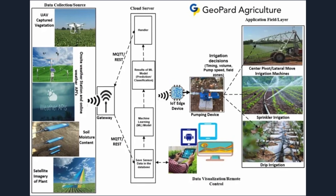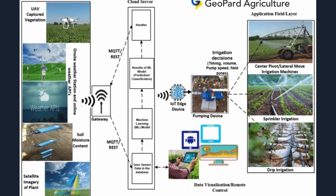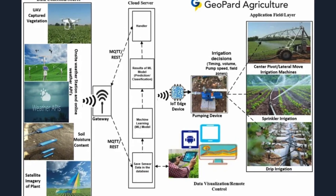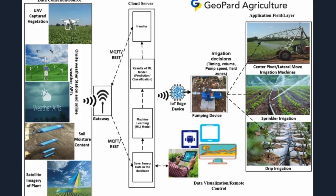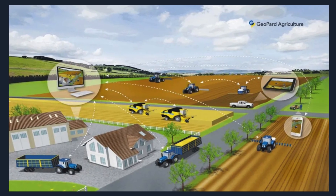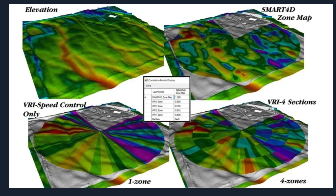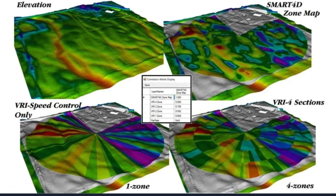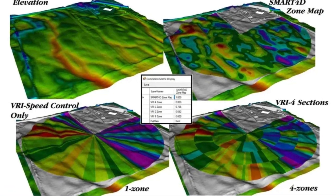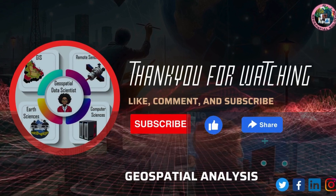Geographic Information Systems have transcended their traditional role as mapping tools to emerge as critical enablers in guiding automated machinery. This technology empowers various agricultural equipment, such as tractors and drones, with spatial data and precision navigation systems.